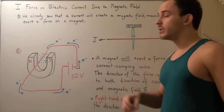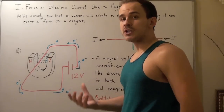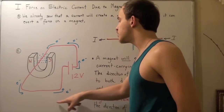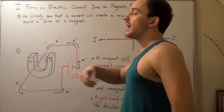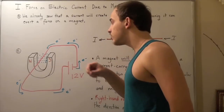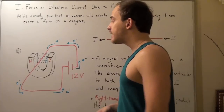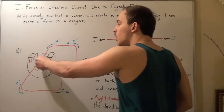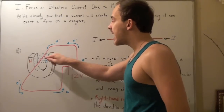Scientists used the following experiment to detect the force. They took a battery and connected it to a circuit, allowing electrons to flow from the anode to the cathode, so the conventional current flows in the opposite direction. They then took a horseshoe magnet with a north pole and a south pole, placed it around the wire so the magnetic field was exposed to the wire, and were able to detect a force on that wire.